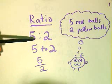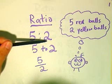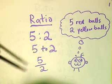Well, you can either write as 5 colon 2, that means 5 red balls to 2 yellow balls. Or you can even write it like 5 to 2 in that way.